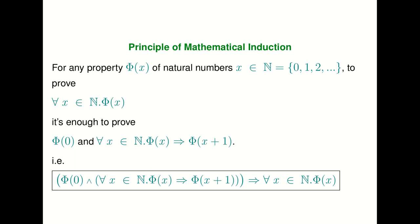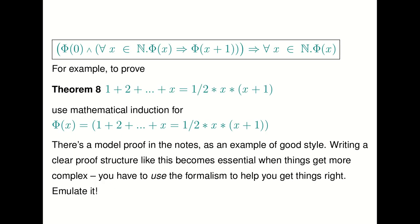Here's a simple example: if you sum the numbers from 1 to x, the total is x times (x+1) divided by 2. We'll prove this formula by induction on x. There is a model proof structure in the lecture notes — writing a clear proof structure is helpful even in tiny cases like this and becomes essential when things get more complicated. You have to use the formalism to get things right.